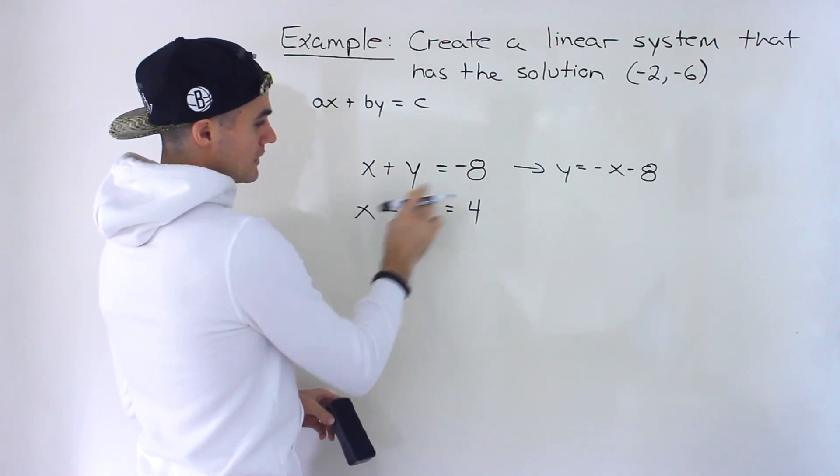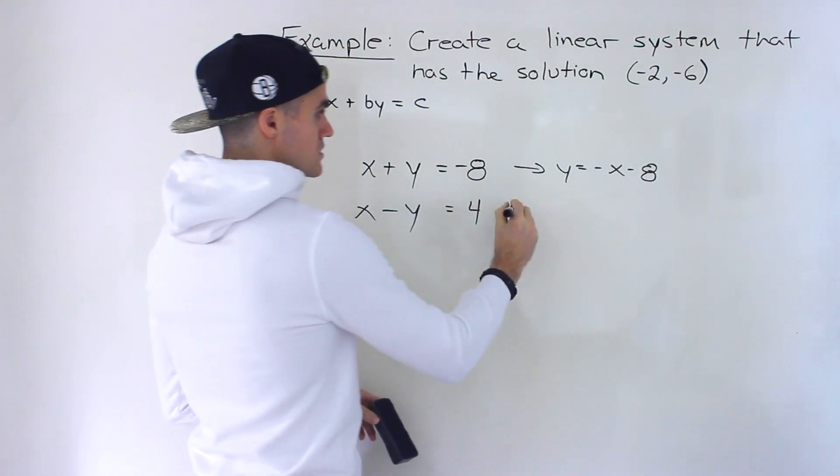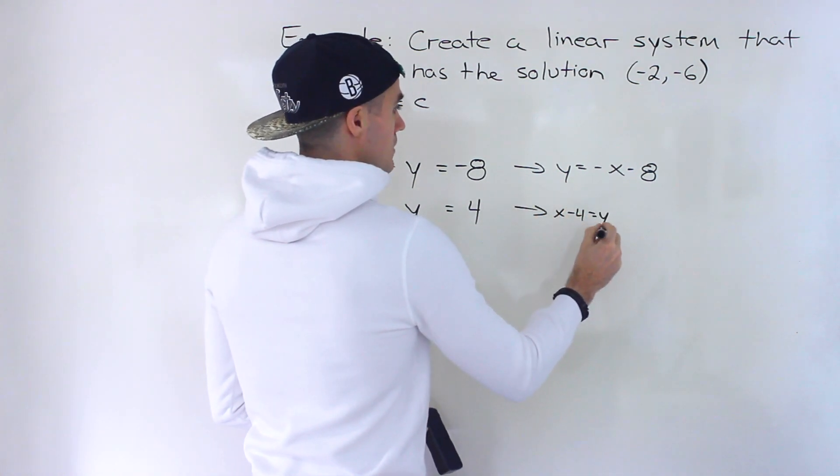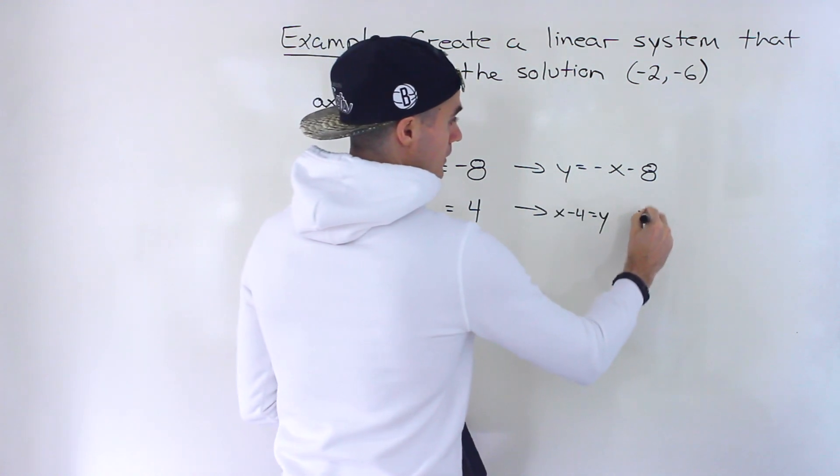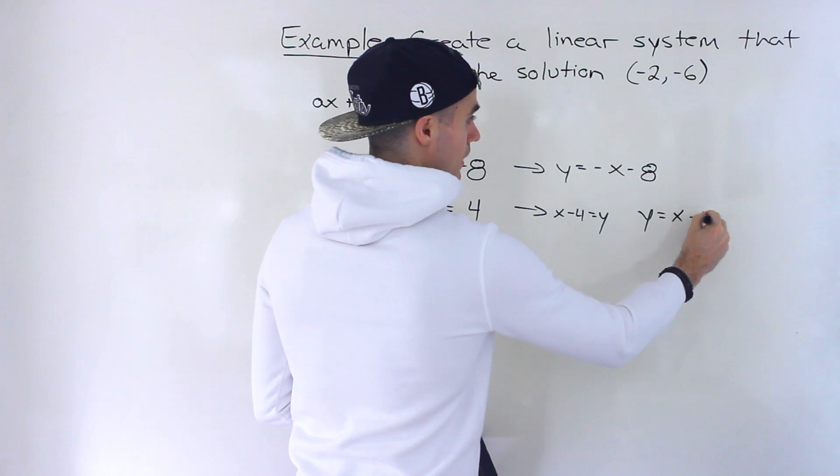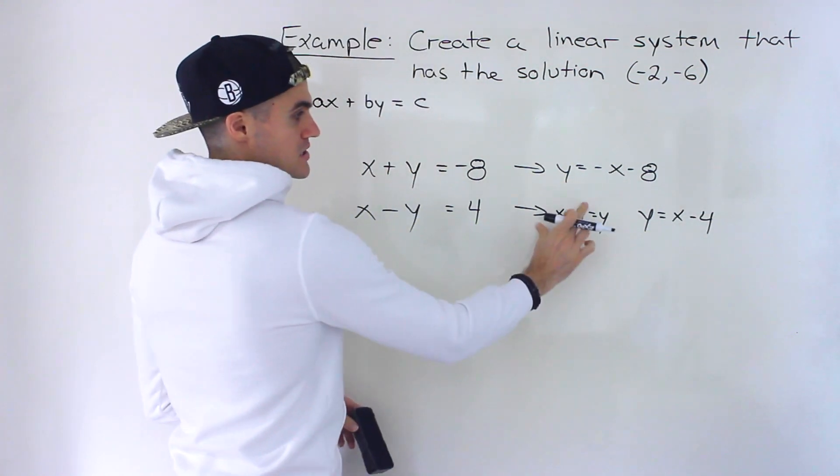And then this over here, I'm going to bring the negative y over, bring the 4 over. So we'd have x minus 4 is equal to y, which if we write it in the y equals mx plus b format, it would end up being just that, just interchanging these.